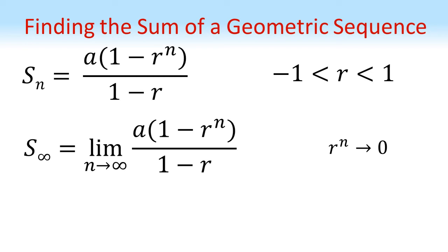So if r to the power of n is tending towards 0, then our bracket 1 minus r to the n must tend towards 1, and so the sum to infinity equals a over 1 minus r.